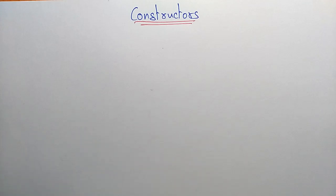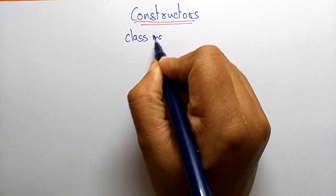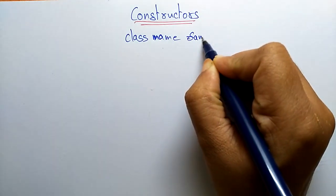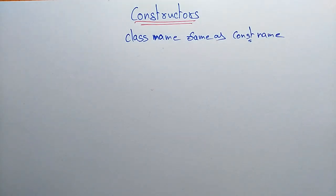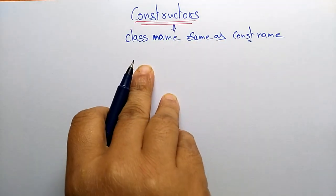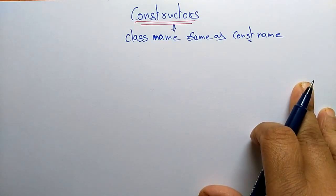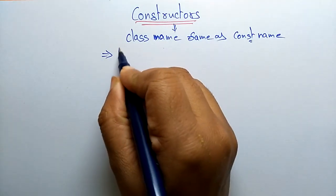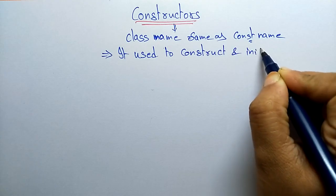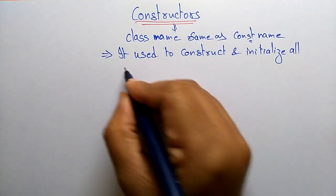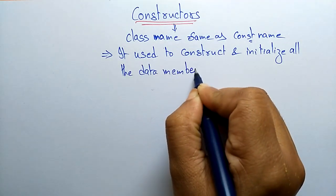Coming to our next topic in object-oriented programming: constructors. A constructor is a special function that has the same name as the class name. That's why we call it a special function. A constructor is used to construct and initialize all the data members.